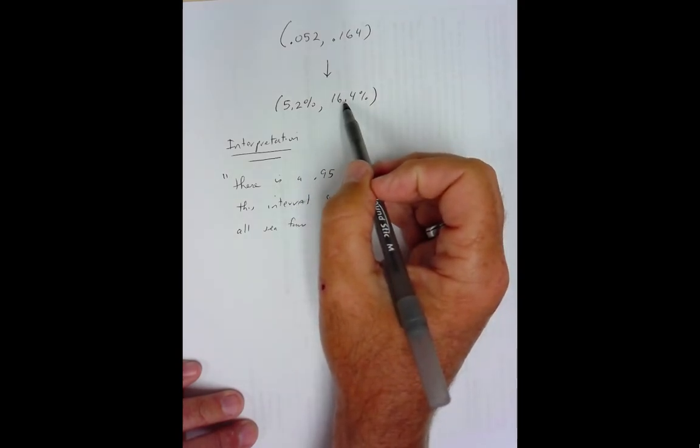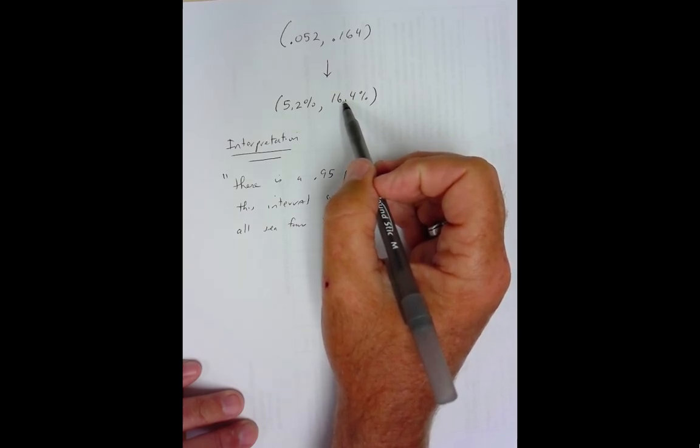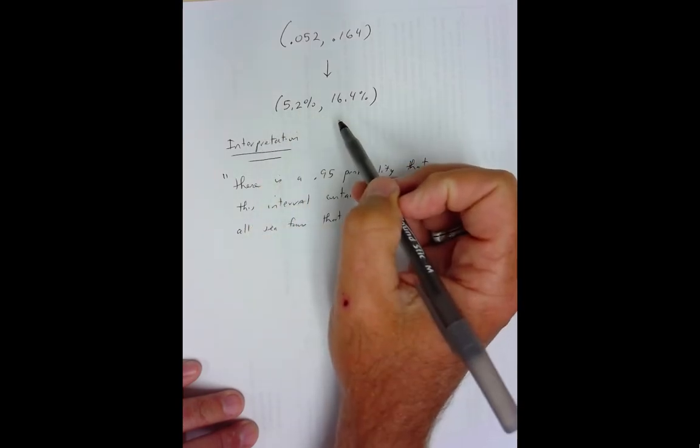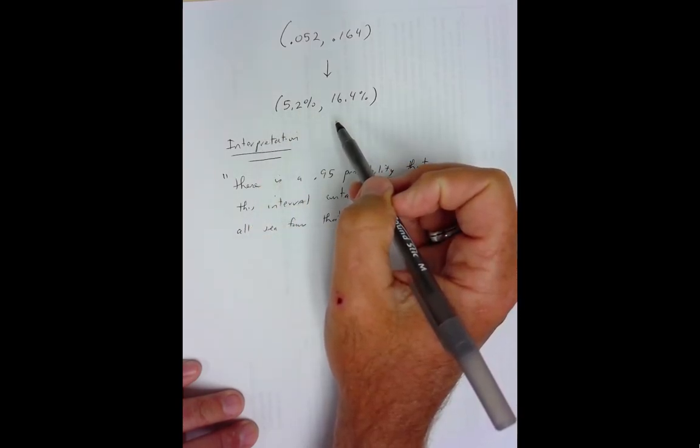You got to make the probability statement about something you know. We got this interval here. And think about it. If there's another diver went down and got 120, he or she would get something different than 13 more than likely because samples vary. So, we'd have a different confidence interval. So, this is a confidence interval, not the confidence interval.